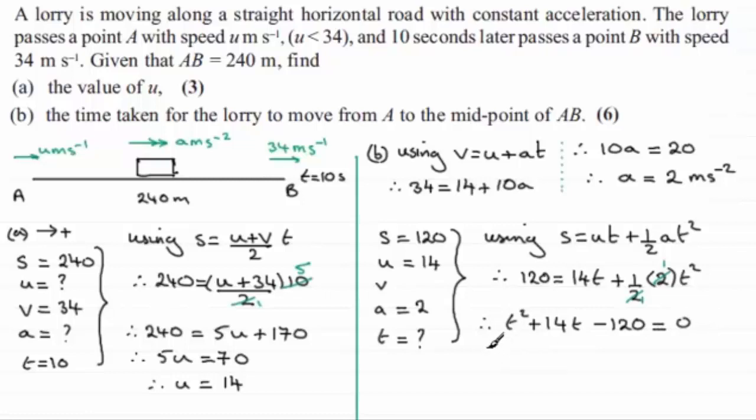And this factorises, a couple of brackets, and it equals 0. And looking at this, we're going to have a T here and a T here to give us T squared. And for minus 120, that's going to be plus 20 times minus 6. 20 times minus 6 will be the minus 120. And I can see that we're going to get minus 6 T plus 20 T, which is the 14 T.